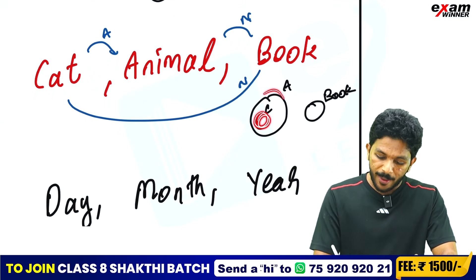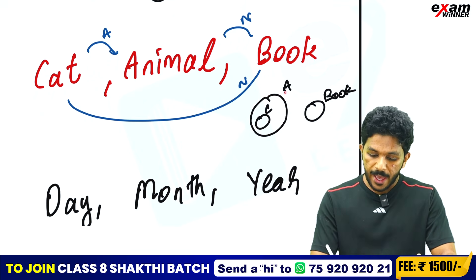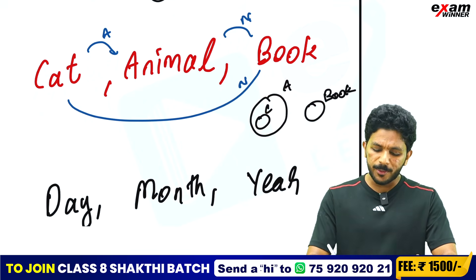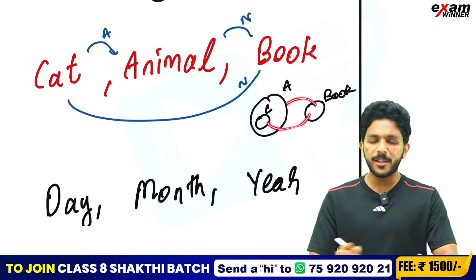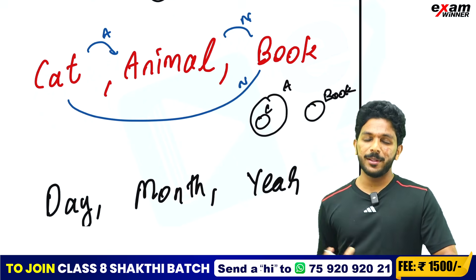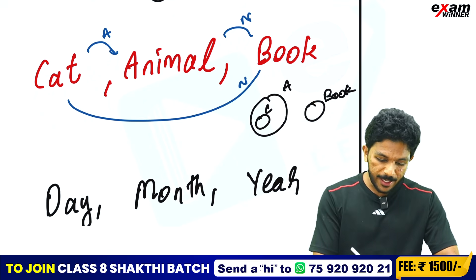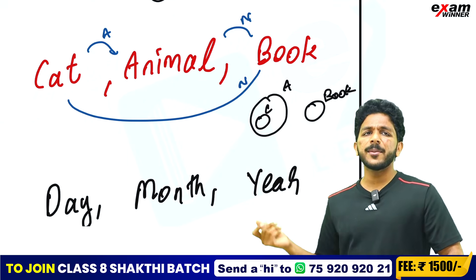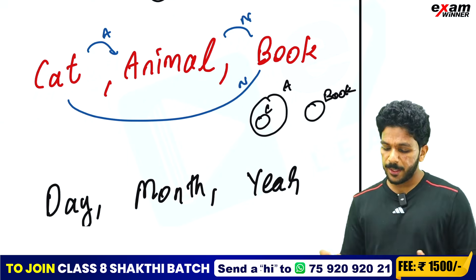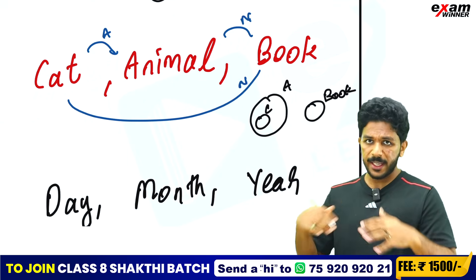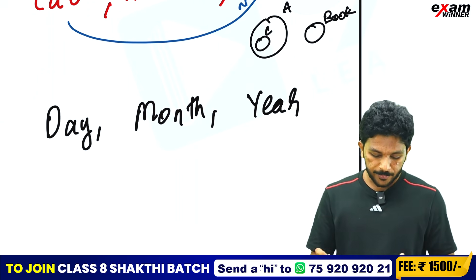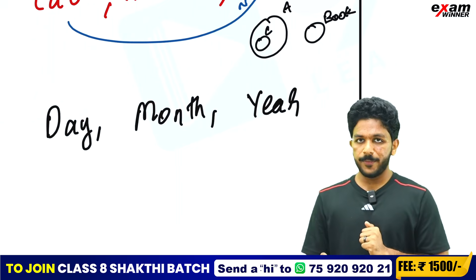All cats are animals — the cat circle sits inside the animal circle. Books are completely separate on the side. Now the next example: Day, Month, Year.